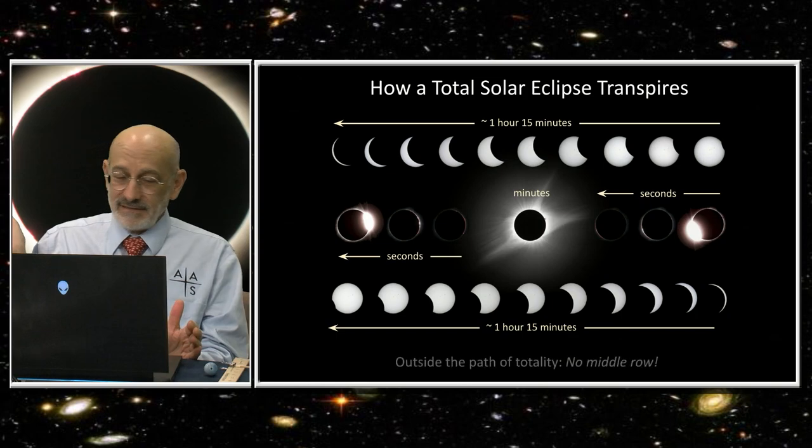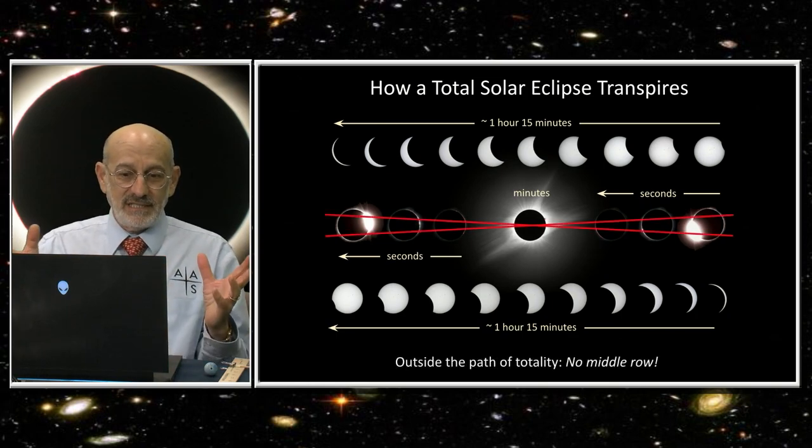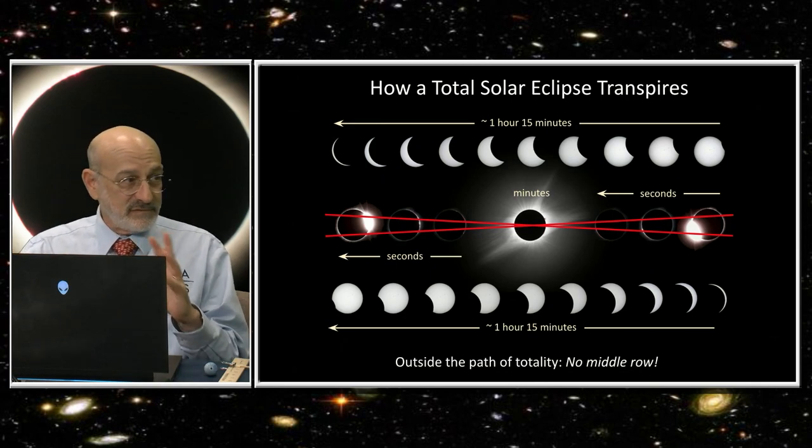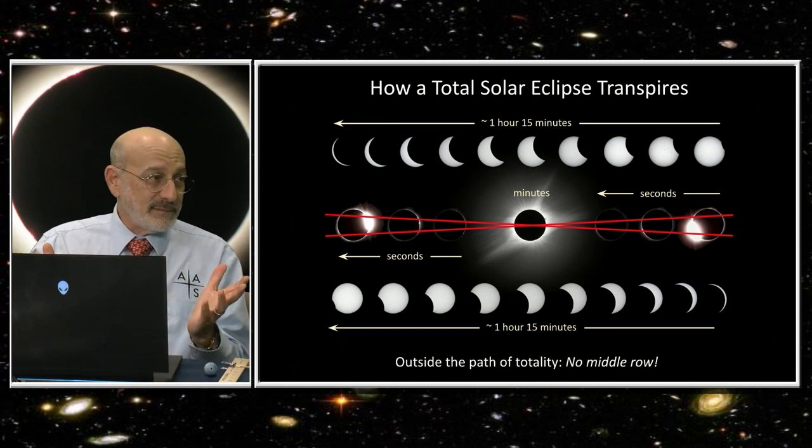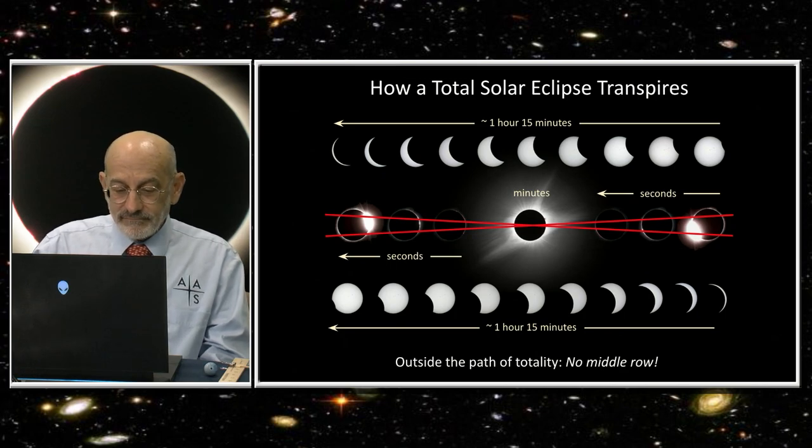The whole thing takes two and a half to three hours, but it's the three to four minutes in the middle where things are really exciting. And if you are not in the path, you miss that middle row. You don't see totality, you don't see the amazing rapid changes that occur right before and after it. You just get a partial eclipse.